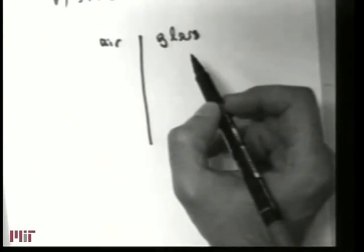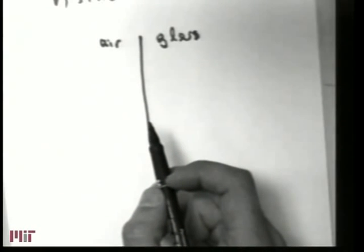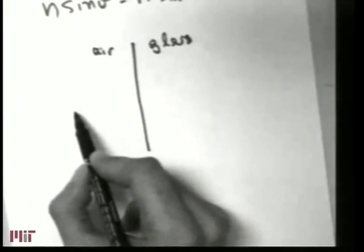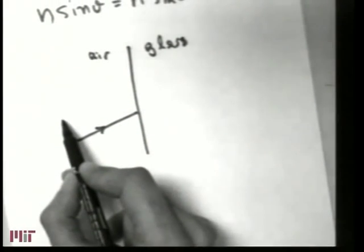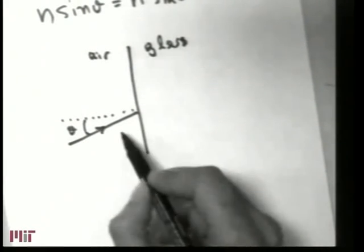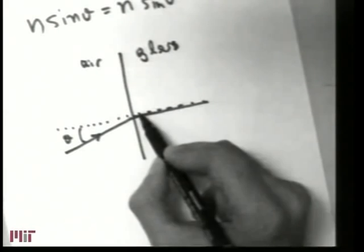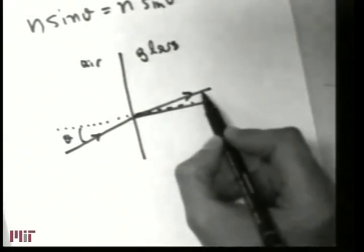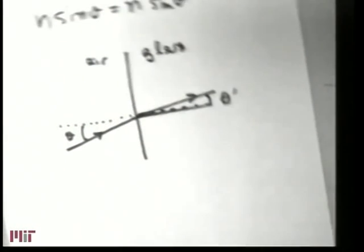So if this is the interface — air and glass — and the ray is incident like this, then we apply Snell's law with respect to the normal. So this is the angle theta, not the one out here, not the other way around, but this one. And of course, the same goes for the other side of the interface — the ray would go in like this, and that would be theta prime. So that was one comment from the homeworks.